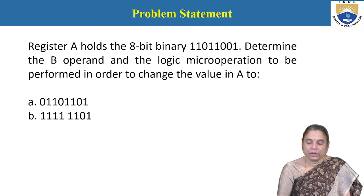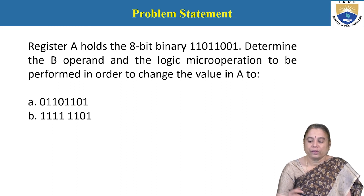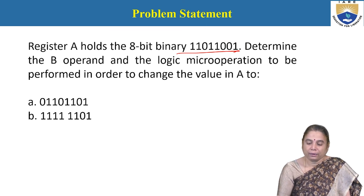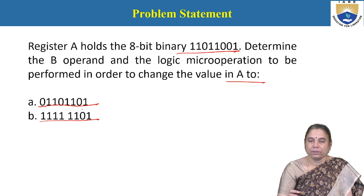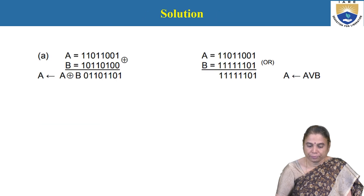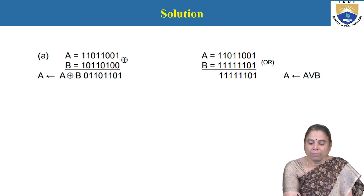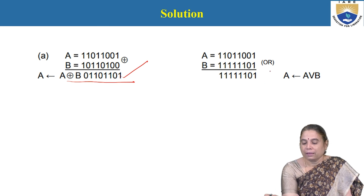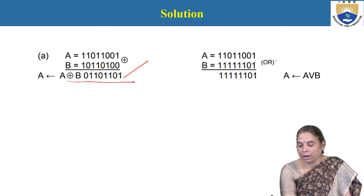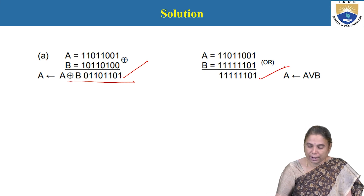The next problem: register A holds 8-bit binary information. Determine the B operand and the logic micro operation to be performed in order to change the value of A with the two given combinations. When A XOR B is performed, the operation produces a 1 wherever an odd number of 1s are present. In the second case, an OR operation is applied to change the content.